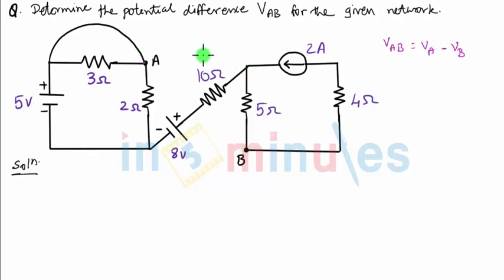If I start from point B and want to travel up to point A, there is only one path available. Note that you cannot travel through a path that consists of a current source, because you can't directly define the voltage across a current source. In this case, we don't have multiple options — there's only one path from point B to point A, and that path does not contain any current source.